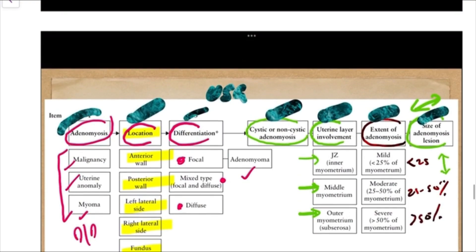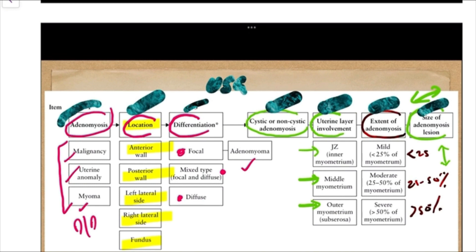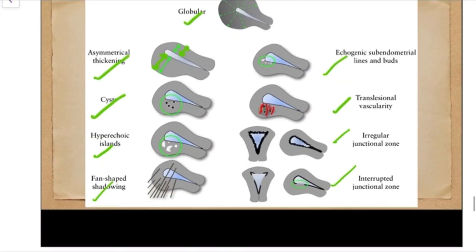To review: we identify adenomyosis by seeing those eight to nine features, then document the location, whether it is focal/diffuse/mixed by the percentage of circumference surrounded by myometrium, the layer involvement (Type 1, 2, or 3), the extent (mild/moderate/severe), and the size — largest diameter if focal, maximum myometrial thickness if diffuse.